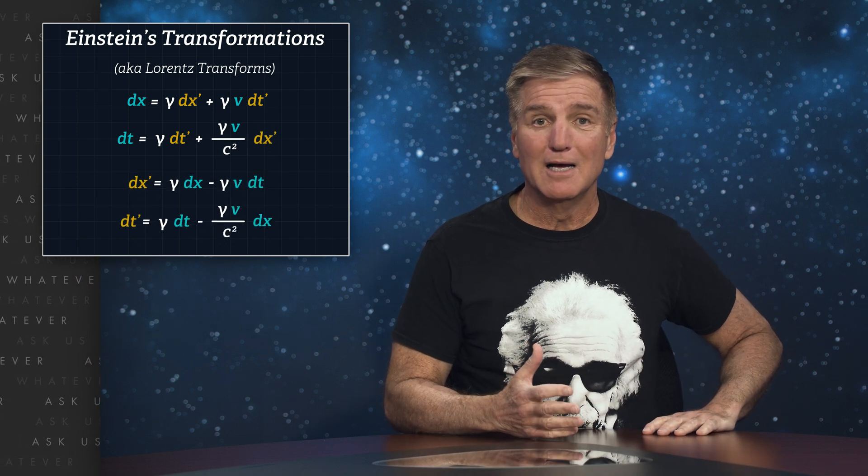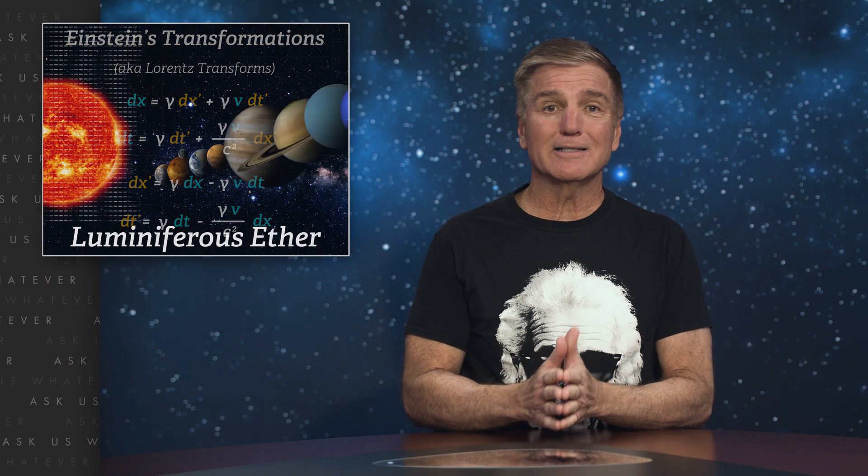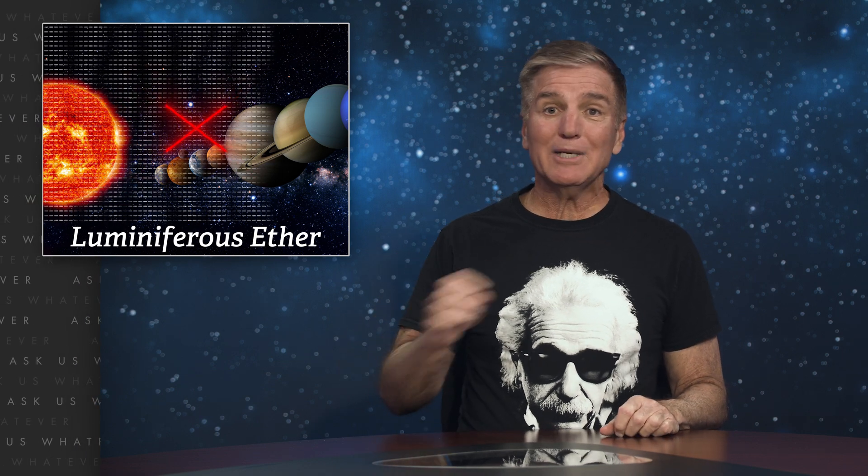It's remarkable that Einstein incorporated length contraction into his special theory of relativity. Einstein did not like the idea of a luminiferous ether and so he eliminated it from special relativity. Yet he clung fervently to the idea of a constant light speed, even though light speed does not need to be constant if you eliminate the notion of an ether from the model for how light propagates through space. Einstein essentially threw out the baby, but didn't throw out the bath water.